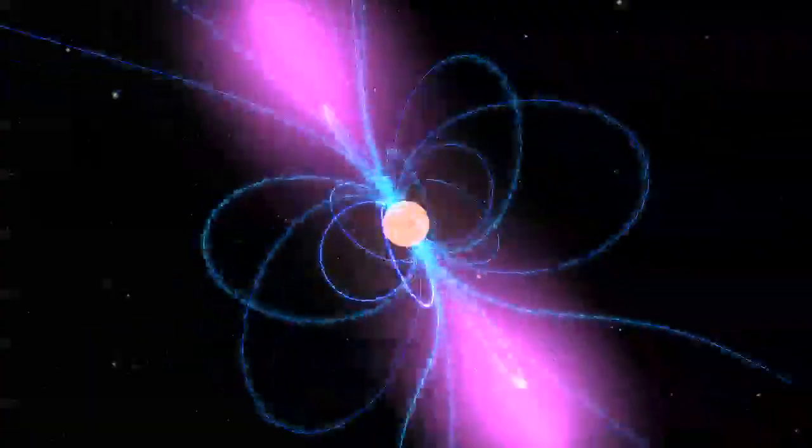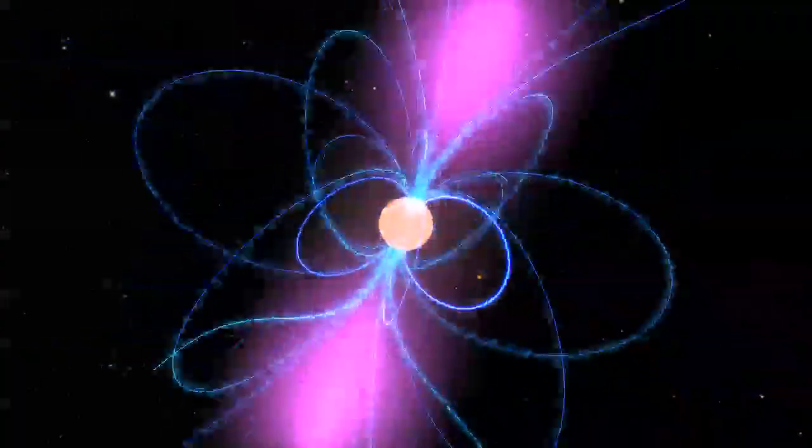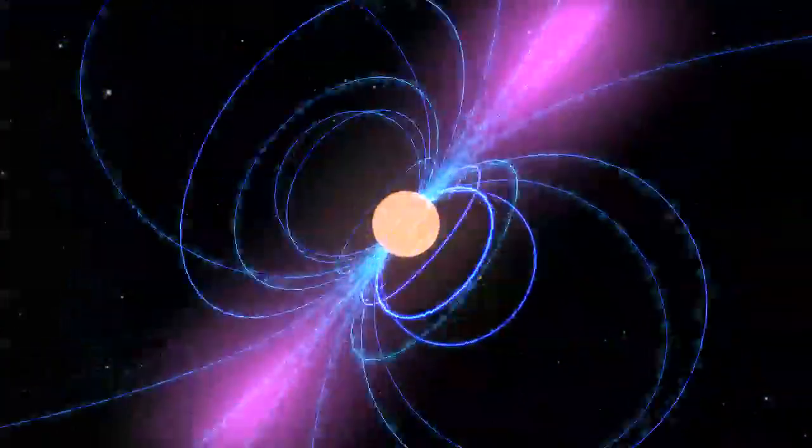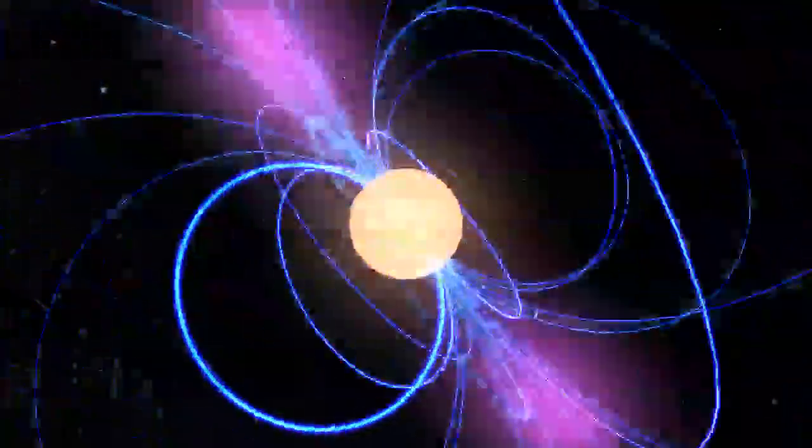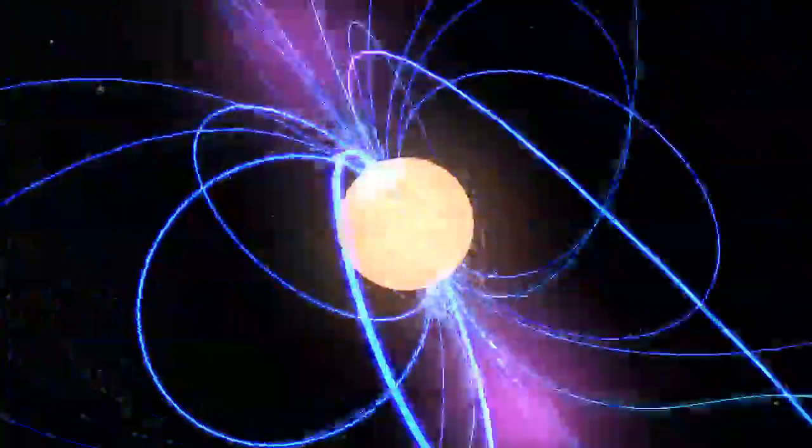A neutron star is what remains when a star several times the mass of the Sun collapses and explodes. With more than the Sun's mass packed into a sphere less than 18 miles across, these objects are incredibly dense. Just a sugar cube-sized piece of neutron star can weigh as much as all the water in the Great Lakes.